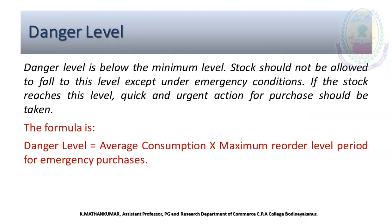Finally, the danger level is below the minimum level. Stock should not be allowed to fall to this level except under emergency conditions. If the stock reaches this level, urgent action for purchase should be taken. The formula is: Danger Level = Average Consumption multiplied by Maximum Reorder Period for emergency purchase.